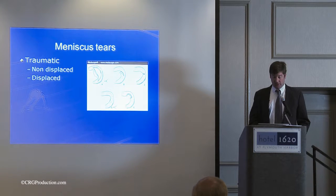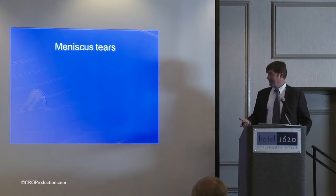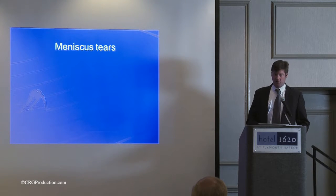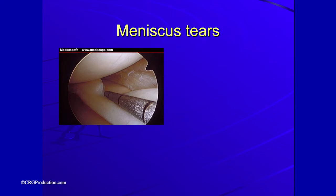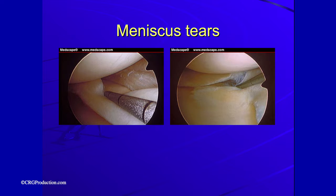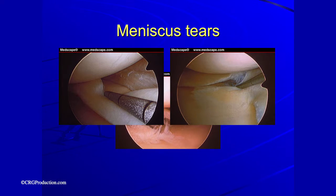Degenerative tears are associated more with arthritis, and you start to ask whether the pain is from the arthritic process or the meniscal tear itself. Traumatic tears can be displaced or non-displaced. Degenerative tears often present with patients who come in with an outside MRI saying they have a meniscus tear, but then you get a weight-bearing view and see arthritis, making the meniscus tear less of a concern. A bucket handle tear through arthroscopy looks like a displaced flap; a degenerative tear is more of a complex, frayed tear, often associated with arthritis.